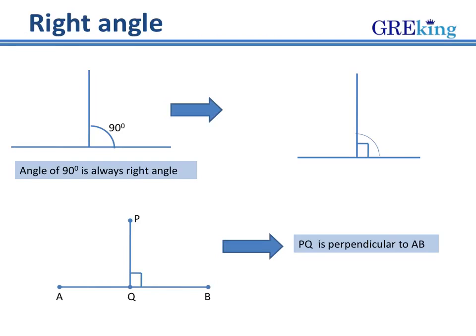What is a right angle? An angle of 90 degrees is always a right angle. How is a right angle made? When a perpendicular is drawn from a point to a line it forms a right angle which is always 90 degrees. So in the example shown here PQ is drawn perpendicular to AB. Hence the angle at Q is 90 degrees which is called a right angle.